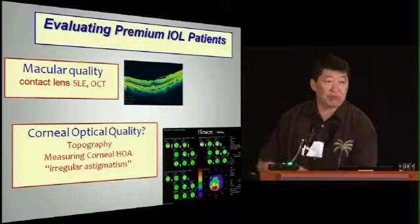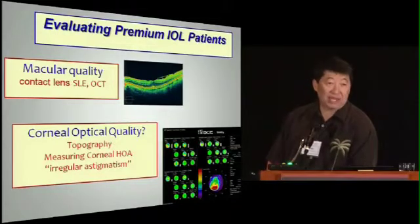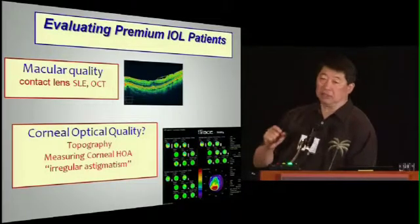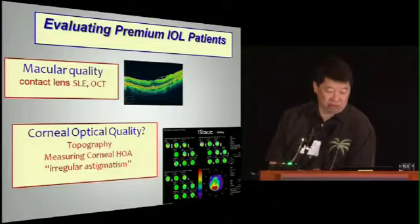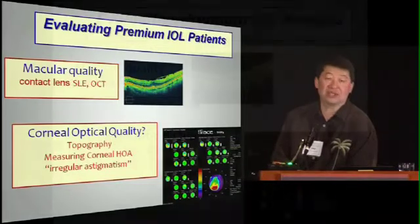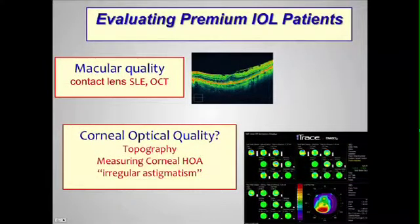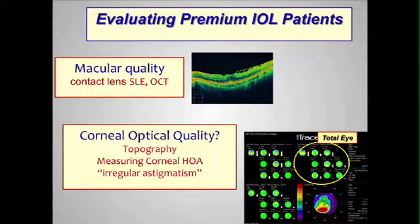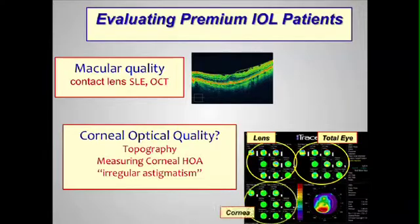We all know the importance — we wouldn't dream of not evaluating the macula if someone was unhappy with their visual quality. We use spectral domain OCT to get 10-micron resolution of macular ultra-structural anatomy. And yet, on these cases, most of us know next to nothing about the optical quality of the cornea. The eye trace combo has been my topographer because in addition to topography, I can get higher-order aberrations. And measuring the entire eye doesn't really help you unless you can separately understand what aberrations are coming from the lens and what are coming from the cornea.